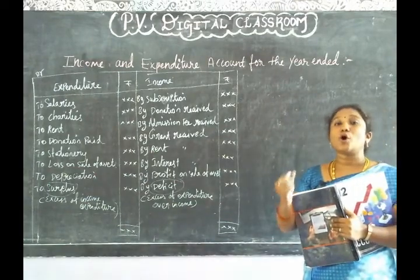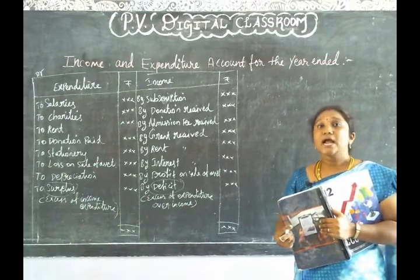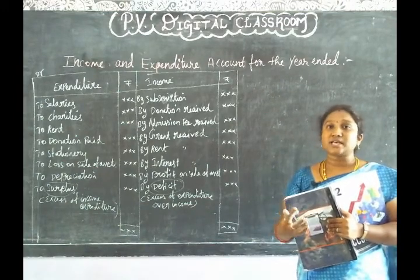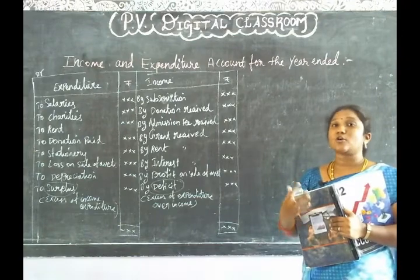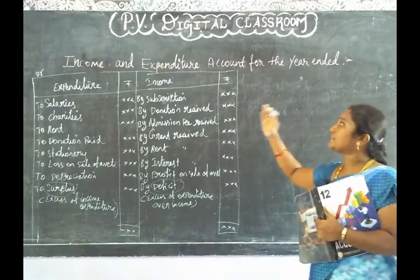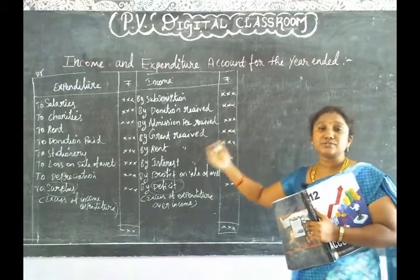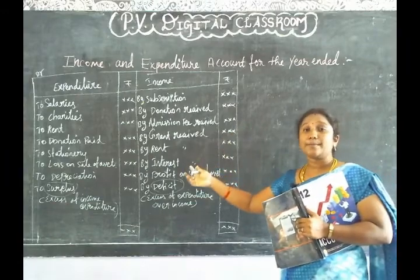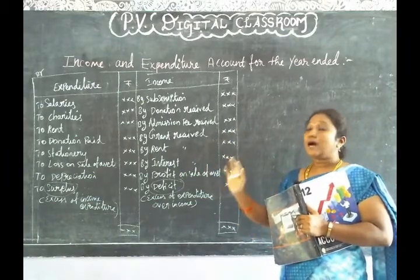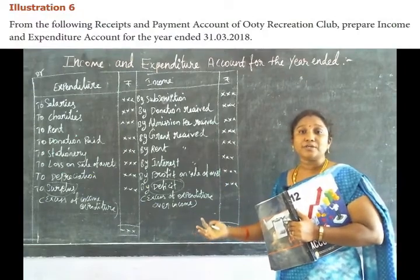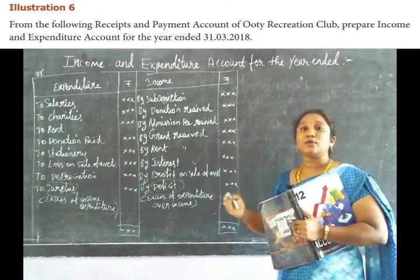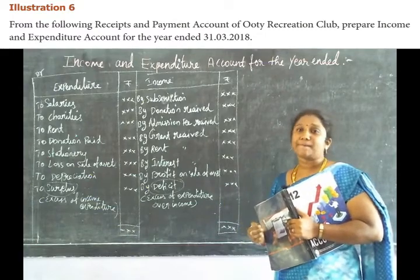We can also add non-cash items such as depreciation values and expenses. We can add depreciation values. Opening value, closing value — we can add these, and then calculate the sum.